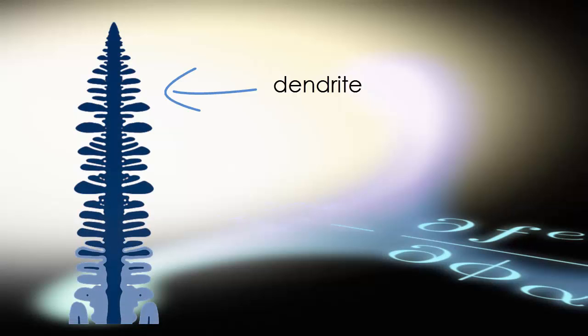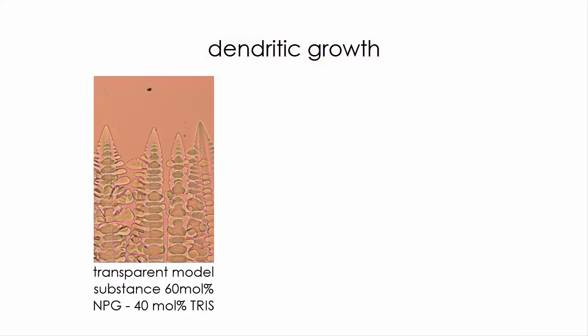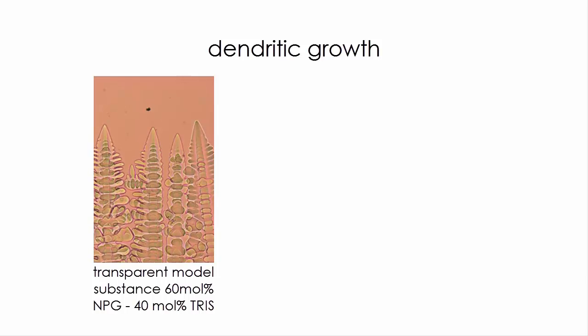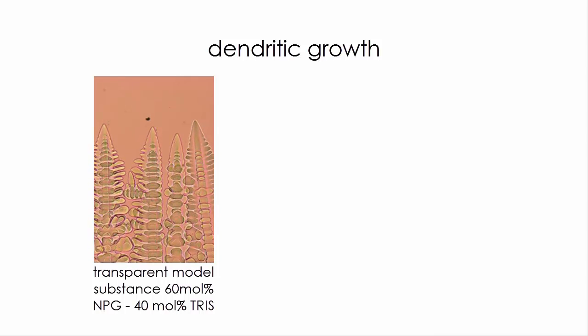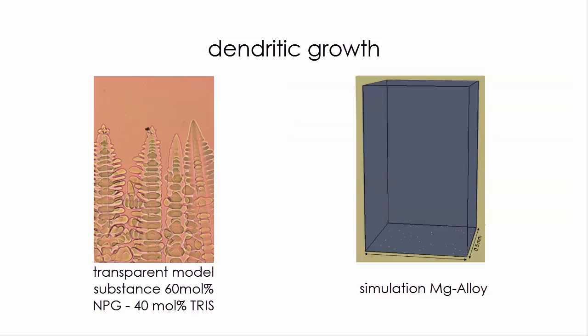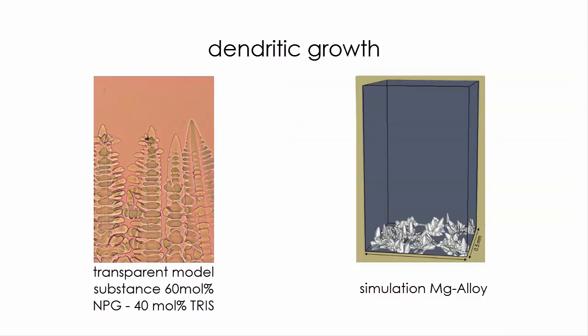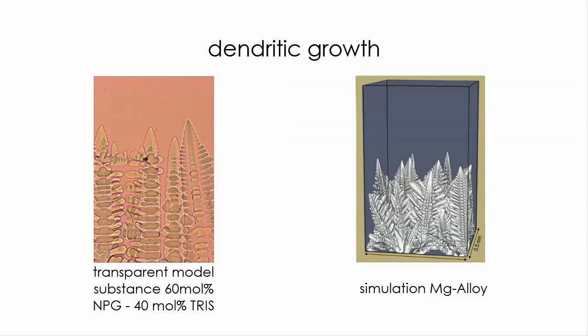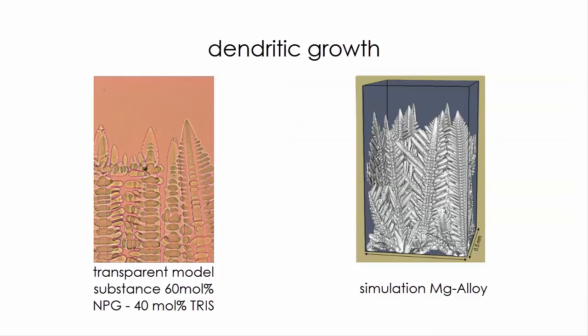The individual grains in general grow in a so-called dendritic growth mode. On the left you see an example of a transparent organic analog system, and on the right you see a simulation performed with a suitable microstructure simulation code for a magnesium alloy.